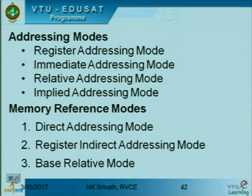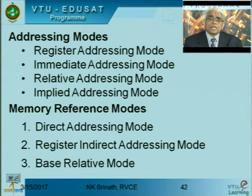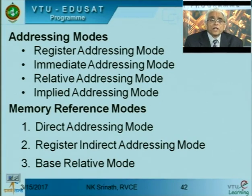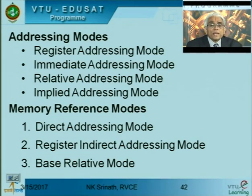The information contained in the instruction code is either the value of the operand or the address of the operand. We have four major addressing modes: register addressing mode, immediate addressing mode, relative addressing mode, and implied addressing mode. In register addressing mode, operands are available in registers. In immediate mode, the data is in the instruction itself. Relative is with respect to the instruction pointer. Implied means the operand is understood from the instruction itself.